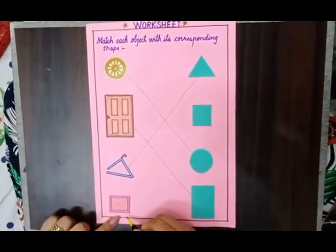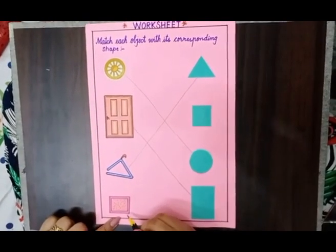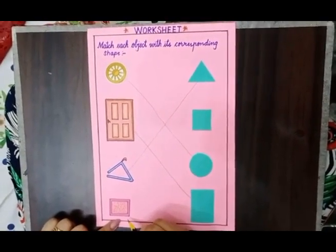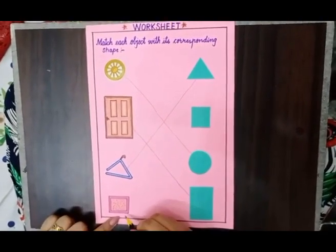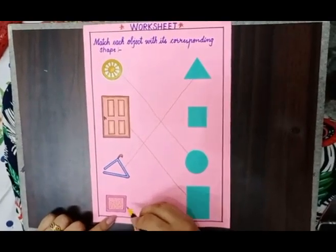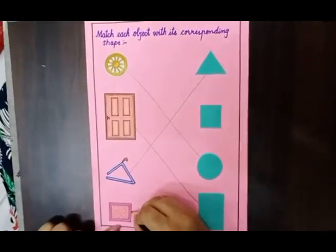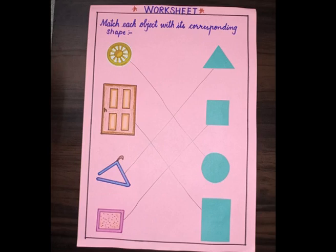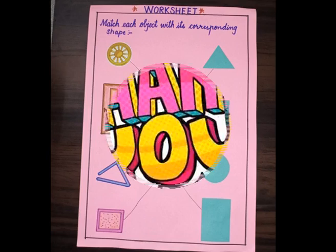This is a hanky, and what is the shape of a hanky? It is of square shape. So you have to match the hanky with the square, like this. So my dear kids, practice this worksheet at home and share the image with your teacher. Thank you, have a nice day!